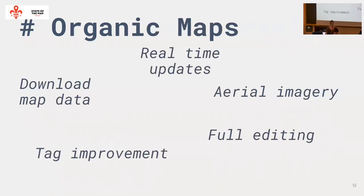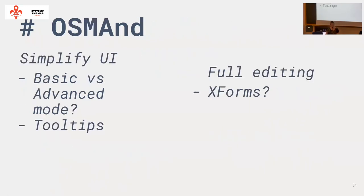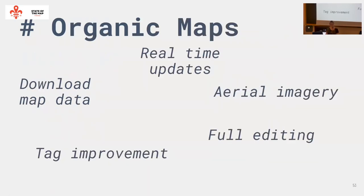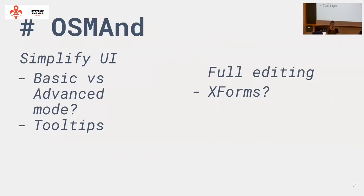We're looking mostly at Organic Maps and OSM AND because cross-platform support probably matters, and if you're looking at casual mappers rather than big campaigns, you want people who are using an app to be able to fix it on the fly. These are the two that have navigation built in and support both platforms. Organic Maps needs server problems fixed before features can be built — it's easy to use but if you can't download maps, it won't work. OSM AND has lots of features but the user interface needs some work. Our next steps are to meet and talk to the collaborators.